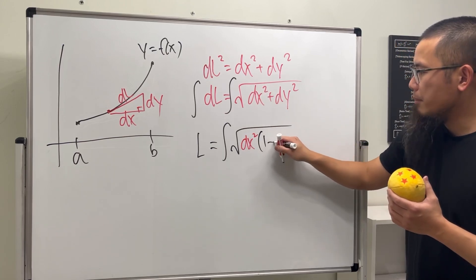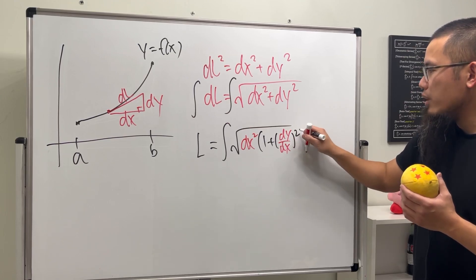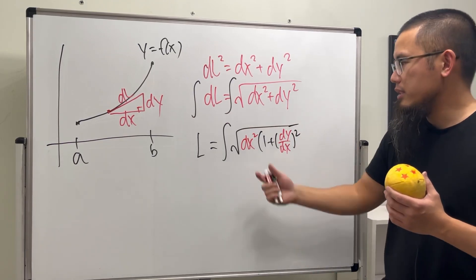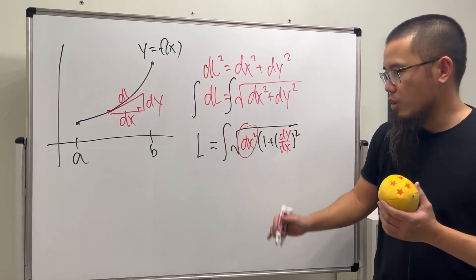Parentheses, and we will have 1 plus parentheses, and we will have the DY DX inside, and then square that. And what's on the outside, don't worry, you see, it's the square root of this times the square root of that, right? So this thing right here can be put on the outside by normal square root.